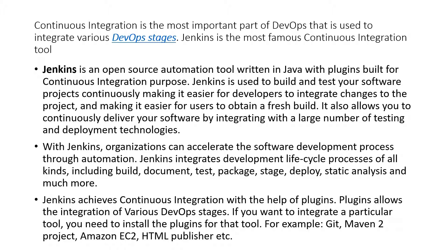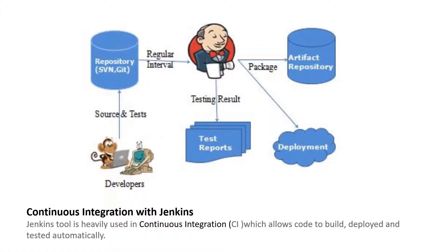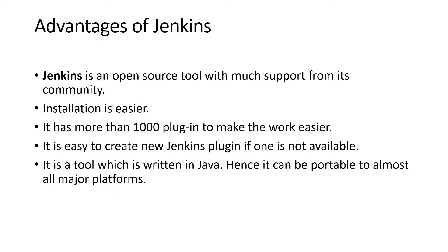Jenkins achieves continuous integration with the help of plugins, which allow integration of various DevOps stages. If you want to integrate a particular tool, you need to install the plugins for that tool — for example, Git, Maven 2 project, Amazon EC2, HTML Publisher, etc. Jenkins is an open source tool with great community support. Installation is easy, it has more than 1000 plugins, and it is easy to create new plugins if one is not available. It is written in Java, making it portable to almost all major platforms.